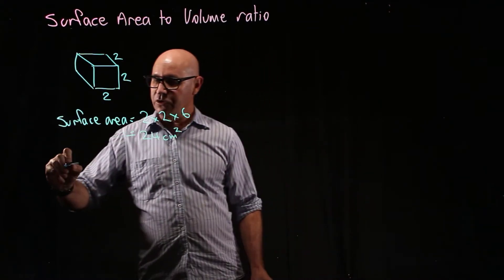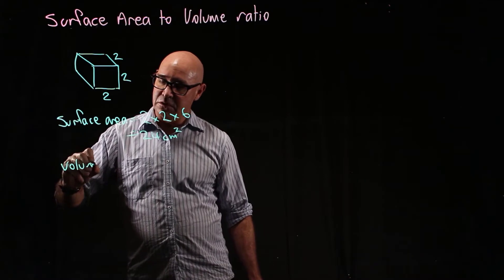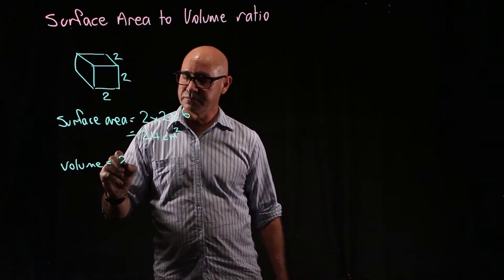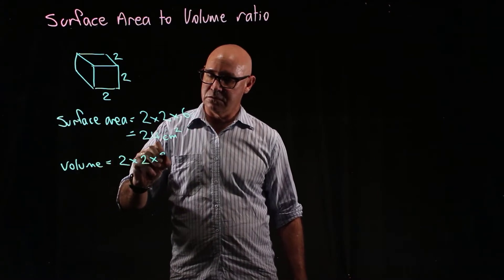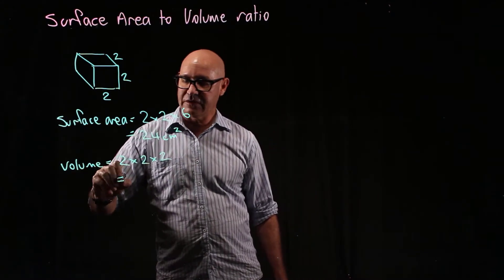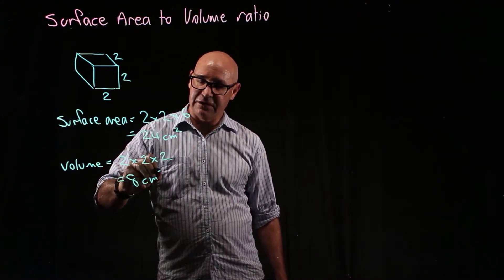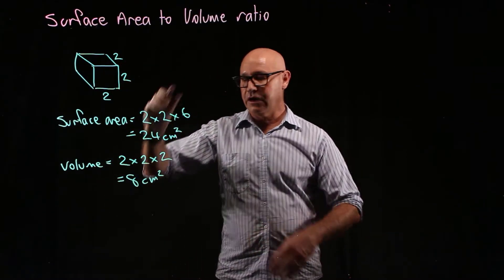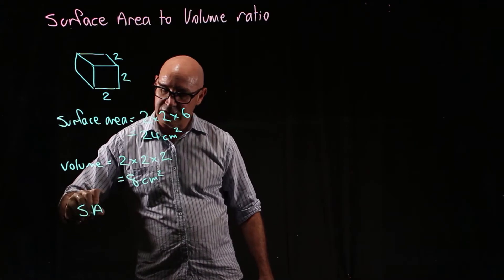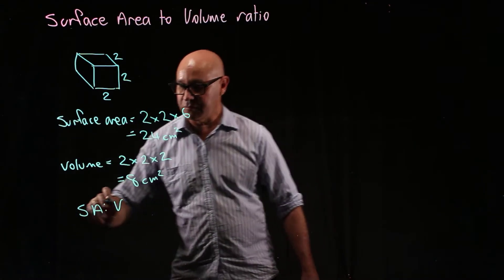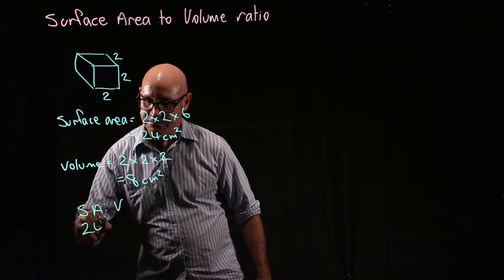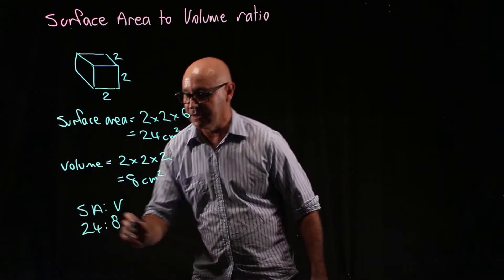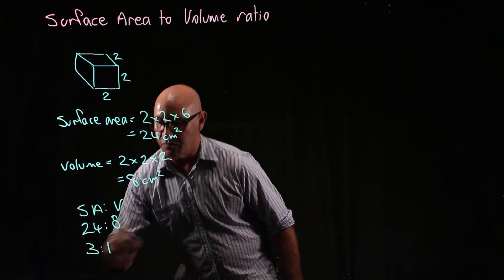Now to work out the volume, the volume is going to be 2 by 2 by 2, and that means that's going to be 8 centimeters cubed. So the ratio, the surface area to volume ratio, is going to be 24 to 8, or if we simplify that, it's going to be 3 to 1.